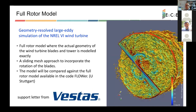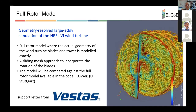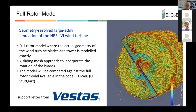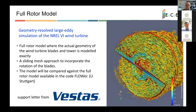We have also started, within ECHO-2, the simulation of a wind turbine in great detail — this was not part of ECHO-1. We can simulate the real blades and their rotation. Part of the mesh is rotating and part is fixed, so coupling strategies between these two parts of the mesh are needed. We have obtained a support letter from Vestas, the biggest wind turbine producer in the world, located in Denmark. The final objective would be to combine a whole wind farm simulation with the rotating blades.